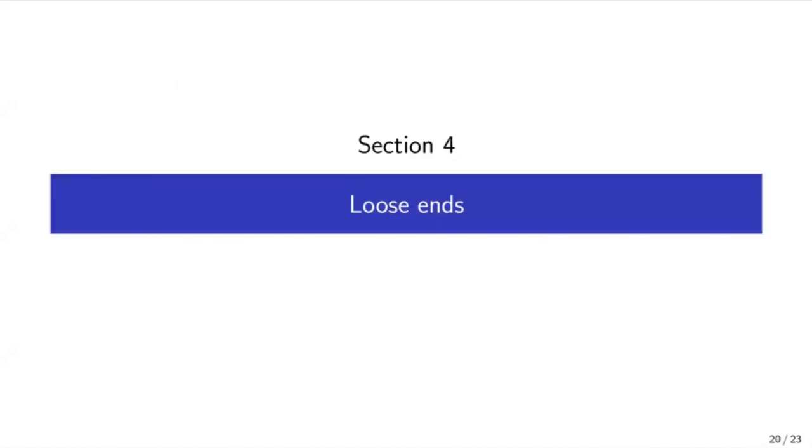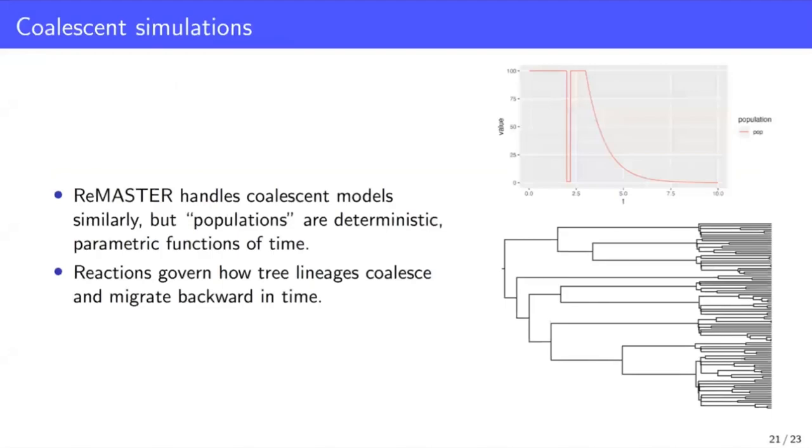So just some additional things. Firstly, I haven't until now mentioned coalescent simulations. Remaster handles coalescent models similarly to the way we've discussed for birth-death models. But here, populations, instead of just an initial population size, they are deterministic parametric functions of time. And the reactions that one must specify govern how tree lineages coalesce and migrate backward in time, rather than how the process evolves forward in time.